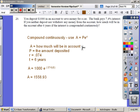A, which means how much will be in the account after a certain amount of time. P, the amount deposited. R is .074. How did I get R? I divided 7.4 divided by 100 and got .074, and my time is 6 years.